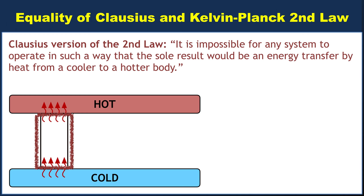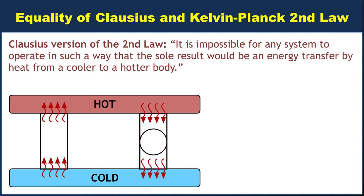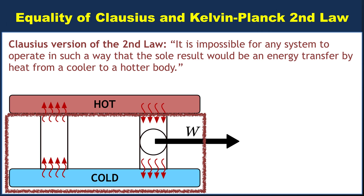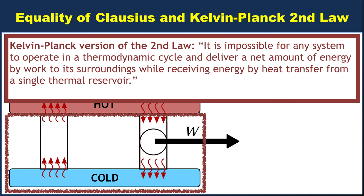Now we want to prove this also violates the Kelvin-Planck version. We put a cycle over here that takes heat energy from the hot reservoir, dumps heat energy to the cold reservoir, and does work — that's just a regular power cycle; totally acceptable. Now we define our system, in a somewhat unusual move, to include both the cycle, the bar connecting the two reservoirs, and the cold reservoir itself — so you draw a really large system boundary. Our system is now in contact with a single thermal reservoir, the hot reservoir, since the cold reservoir is internal to our system. And this system has done work on the environment. That's a violation of the Kelvin-Planck version. So we set up a system that violated the Clausius version, and as a result we violated the Kelvin-Planck version.